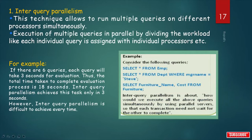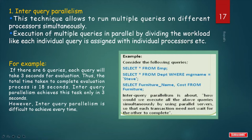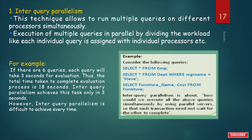Another example of inter-query parallelism — three queries: SELECT * FROM emp; SELECT * FROM department WHERE manager_name = 'Steve'; and SELECT furniture_name, cost FROM furniture. Inter-query parallelism is about executing all these queries simultaneously using parallel servers so that each transaction need not wait for another to complete.